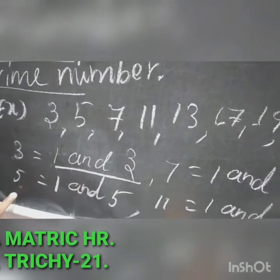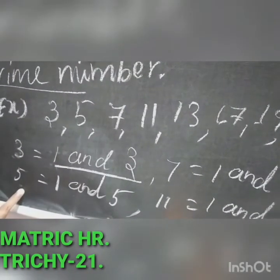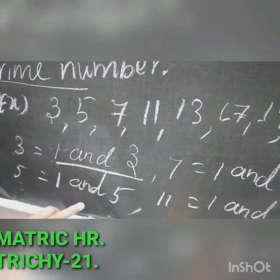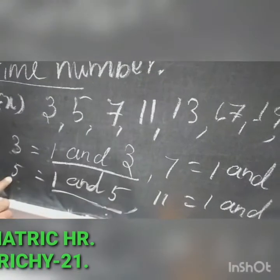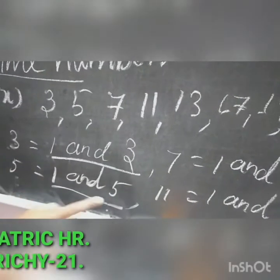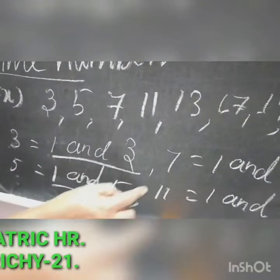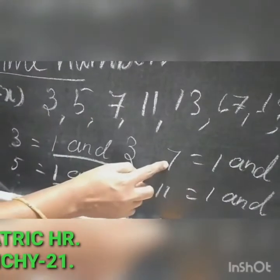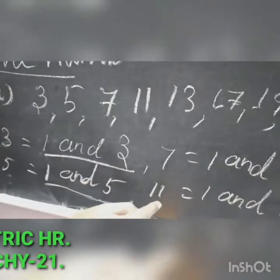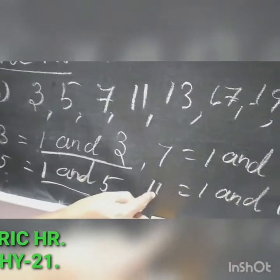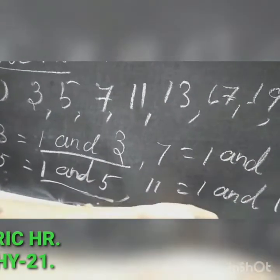For the number 5, the factors are 1 and 5 only. The factors of 7 are 1 and 7 only. The factors of 11 are 1 and 11 only.